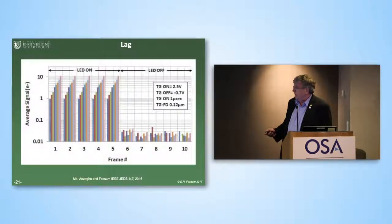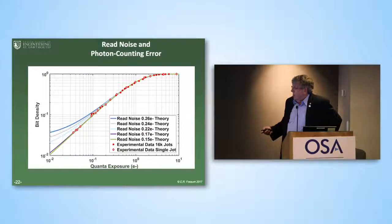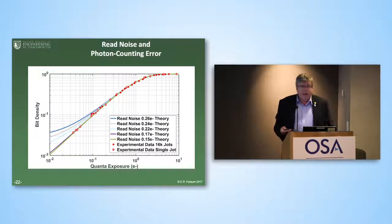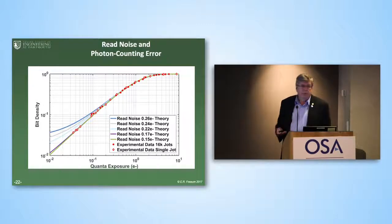Lag is also well behaved. Illuminating with one electron on average over a bunch of frames, then cutting off the light, we see we're down in the noise — what we see is not really lag, it's some other stuff. Regarding the log density versus log quanta exposure and the 1 minus e to the minus h nonlinearity: when you get down to low exposures in low light, if you have read noise of 0.26 electrons (the blue curve) you're dominated at low exposures by bit errors — miscounting thermal noise events as photons. Getting down to about 0.15 electrons rms, we get pretty good behavior, and the red dots are experimental data.